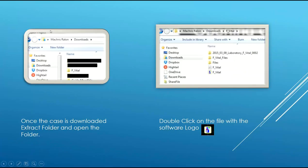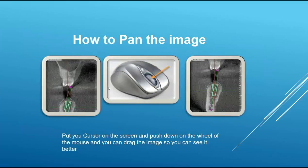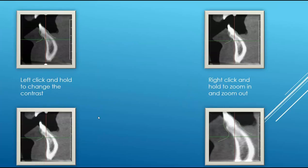Once you have the file downloaded and extracted, double-click on the file with the software logo to open it. Some basic information for using the software: it's much easier if you use a wireless mouse instead of a laptop trackpad. When using the mouse, pushing down on the scroll wheel allows you to pan the image. Left-clicking and holding on the CT will change the contrast, and right-clicking and holding on the CT will zoom in and out.